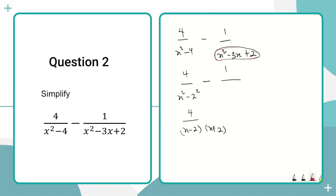Using the Casio 991EX calculator: go to Mode, select 5 for equations, then select 2 for quadratic. Enter the coefficient of x squared as 1, the coefficient of x as negative 3, and the constant as 2. The calculator gives the roots as x equals 2 and x equals 1.